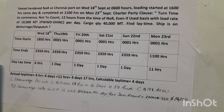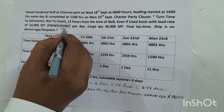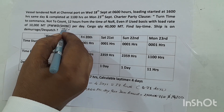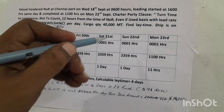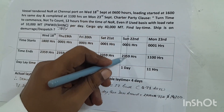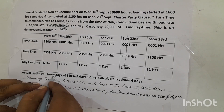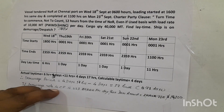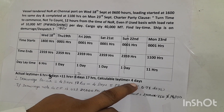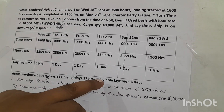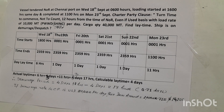Now if the contract is on SHEX basis instead of SHINC, Sunday is excluded. In this problem, Sunday 22nd September would not be counted. So instead of 4 full days, we only get 3 days. Total time becomes 6 hours plus 3 days plus 11 hours — that is 3 days and 17 hours. The calculable laytime is still 4 days, but the vessel has taken less time, so it is on dispatch and the ship owner pays an incentive to the cargo owner.